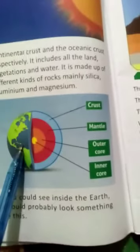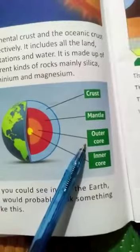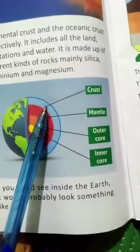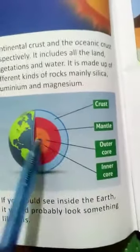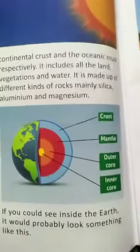Look at this picture. In this picture, this is Earth. The yellow color box is called inner core, this orange part is outer core, the red part is mantle, and the outermost layer is called crust. So these are the four layers of Earth.